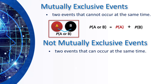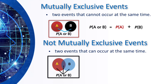For not mutually exclusive events, these are two events that can happen at the same time. Look at the figure. The formula is probability of A or B, that is equal to probability of A plus probability of B minus the probability of their intersection, or probability of A intersection B.